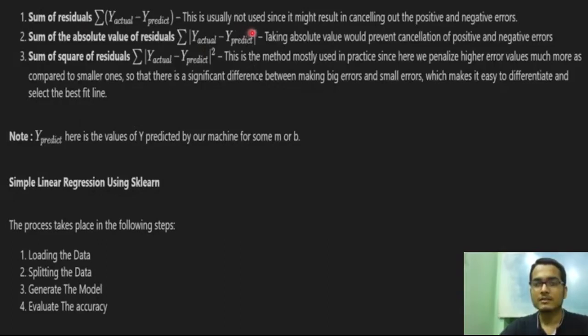This is usually not used since it might result in errors. The sum of residuals may be negative and positive. Negatives may cancel out and we may say we have zero error even if our error is huge. This problem stays here. So this is what's exactly done. This is known as mean squared error. This method is used mostly for simple linear regression using sklearn.